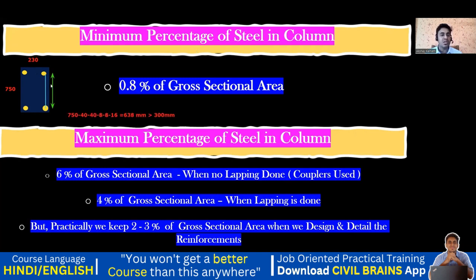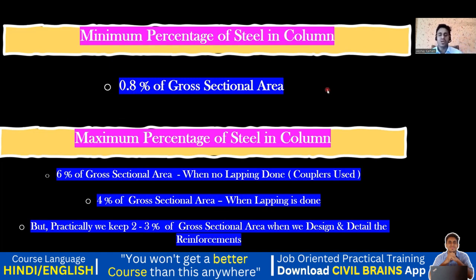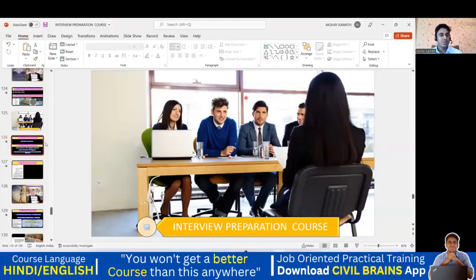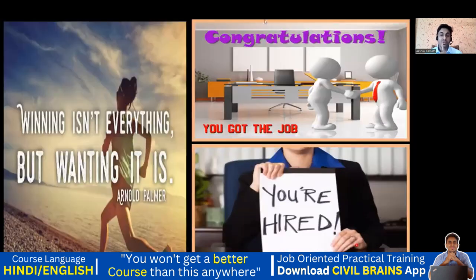Even though no additional bar is needed structurally, the 300 mm spacing limit is violated. So from a detailing and code book standpoint, you must add extra bars. Provide additional 12 mm diameter bars — the minimum bar diameter — in between. This brings the spacing within the 300 mm limit. This is how structural engineering offices actually detail reinforcement.